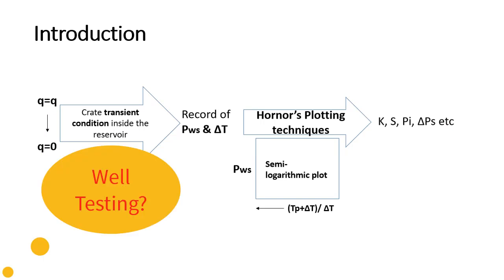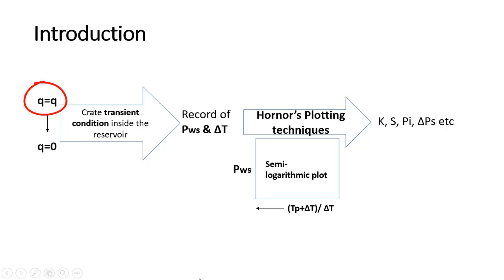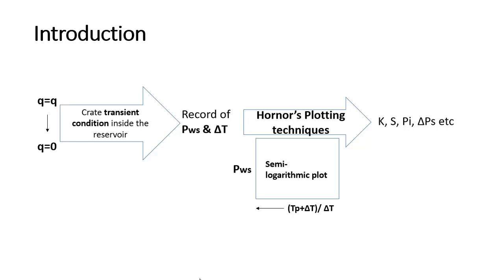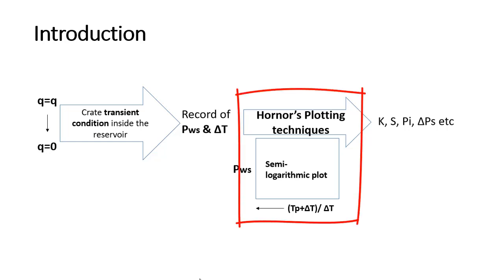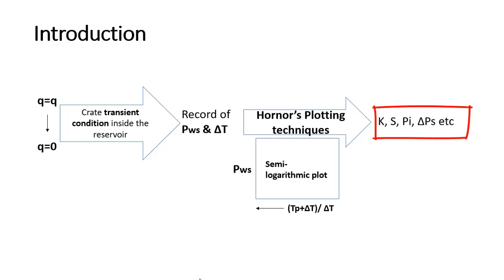So what is well testing? We try to produce our well at a constant rate q, and then suddenly change the rate from a constant flowing rate q to zero — creating a transient inside the reservoir. That transient condition is recorded in terms of wellbore pressure pws for a certain time delta t. We interpret this well test data using the plotting technique called Horner plotting, and from this interpretation we get permeability, skin, initial pressure, or pressure drop due to skin, or various information related to reservoir geometry.